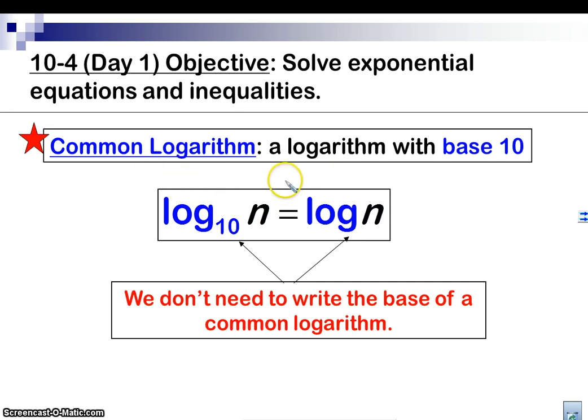So, here's a common logarithm. A logarithm with base 10 is called a common logarithm, and basically you just don't need to put the 10 there. So, if you don't write the 10 there, it means 10. Got it? Good.